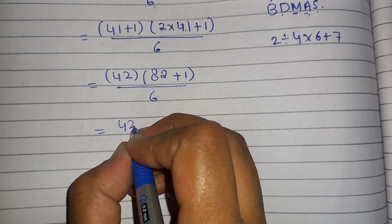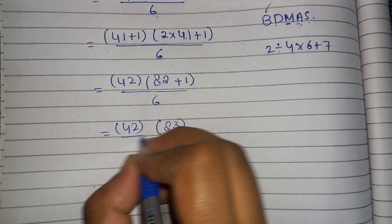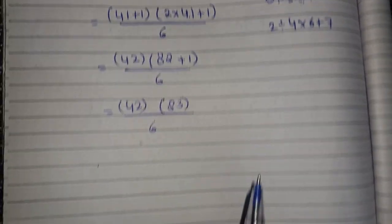Now, after further simplification, we will write 42 and then into 83. First of all, we are solving the brackets.